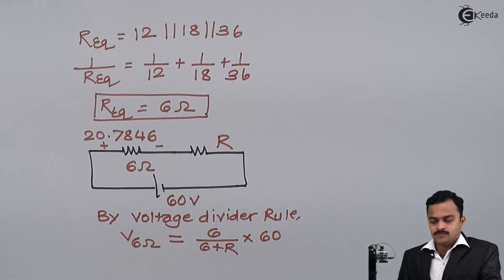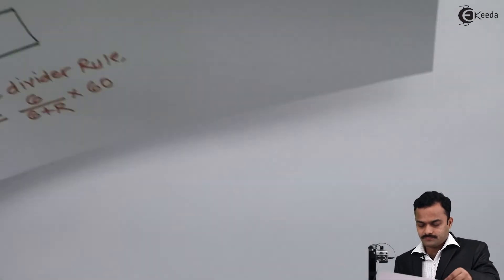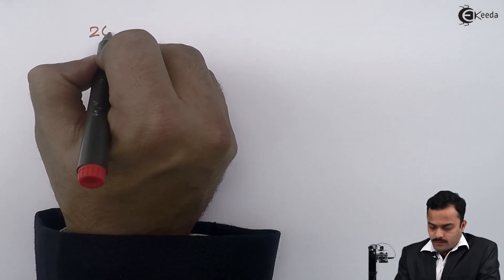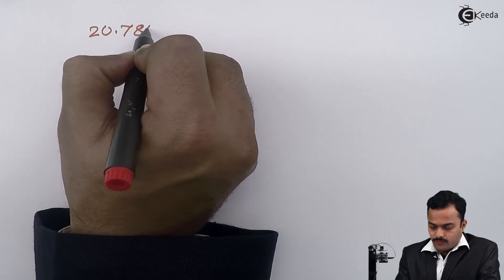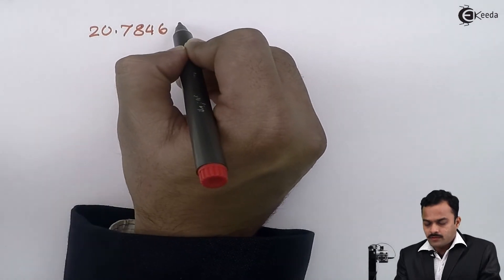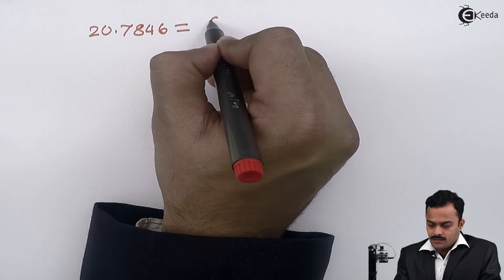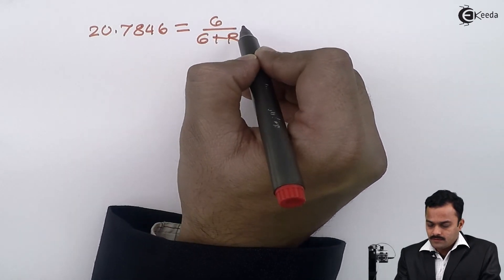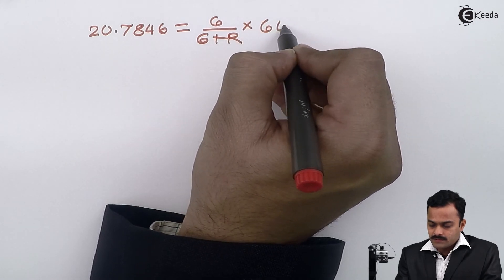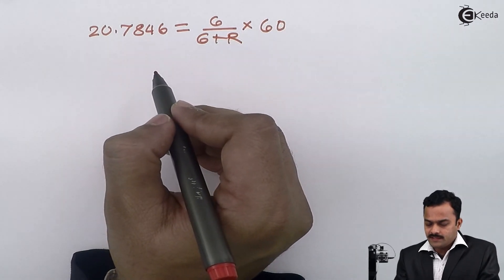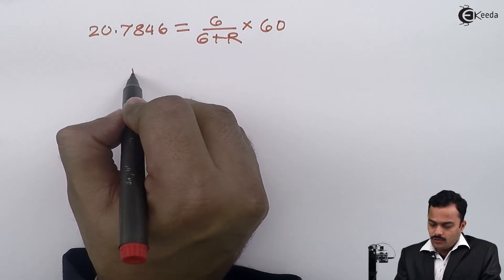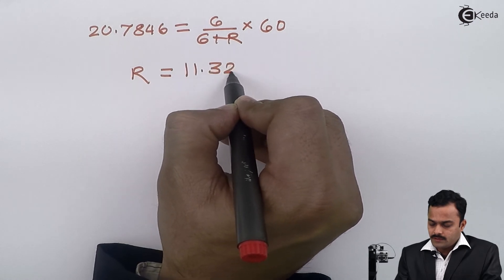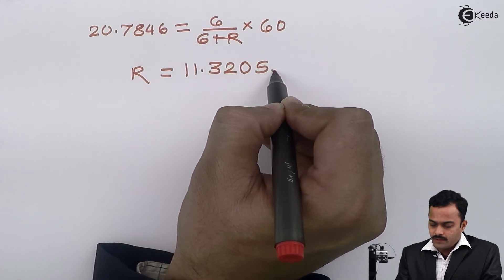After solving this, I could write voltage of 6 ohm is 20.7846 equals 6/(6+R) multiplied by 60. After solving this, I get the value of R as 11.3205 ohms.